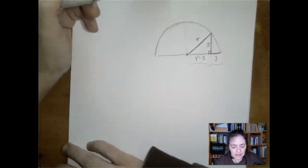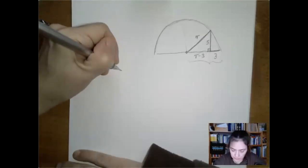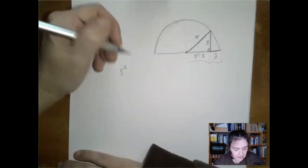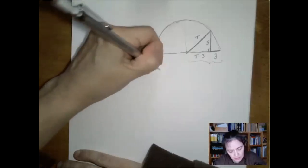And so now we have Pythagorean theorem with two sides unknown but labeled in terms of the same variable. So the Pythagorean theorem stated for this triangle is five squared plus r minus three squared equals r squared.